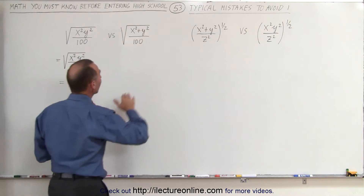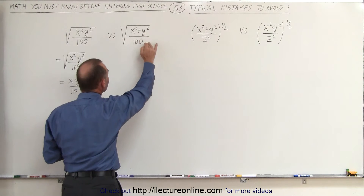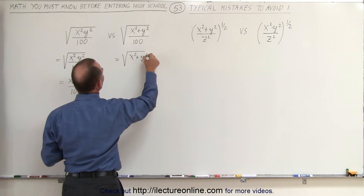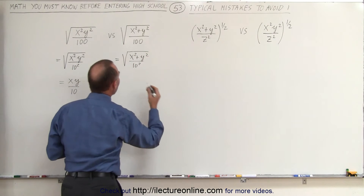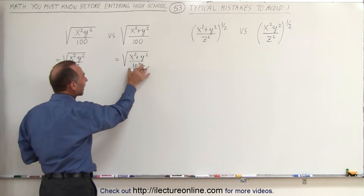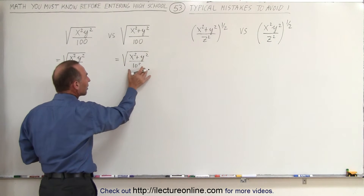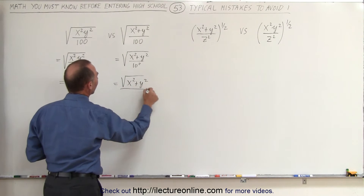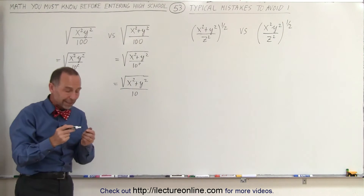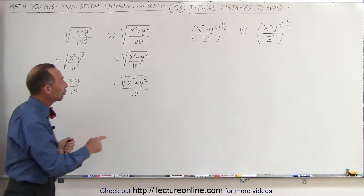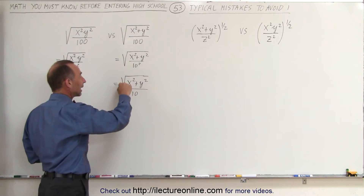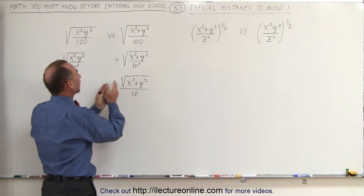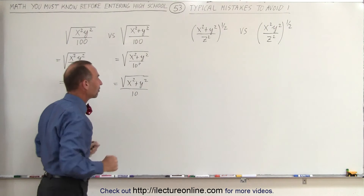On the other hand, when you have something like x squared plus y squared divided by 100, this can be written as the square root of x squared plus y squared divided by 10 squared. We can take the 10 squared out because it's the numerator divided by the denominator, giving us the square root of x squared plus y squared divided by 10. But the numerator cannot be taken outside the radical. Even though there's an x squared and a y squared and we're taking the square root, there's a plus sign here. And because of that plus sign, you cannot take out an x or a y, either one.